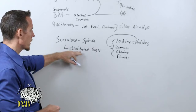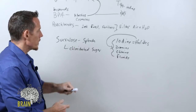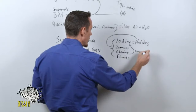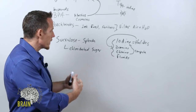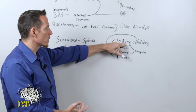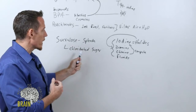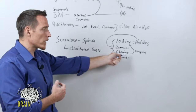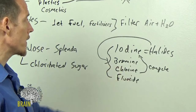Bromine, chlorine, and fluoride compete with iodine for uptake into your thyroid gland. If you have a diet or environment very rich in bromine, chlorine, and fluoride, you can increase your risk of developing low thyroid by iodine inhibition — you prevent iodine from properly being taken up by your thyroid. Sucralose or Splenda — chlorinated sugar — is one reason it does that. We can also get chlorine from drinking water, which goes back to filtering your water.